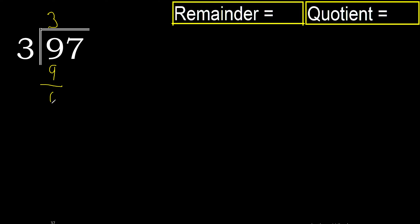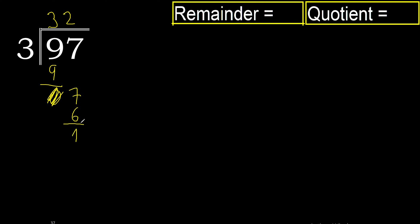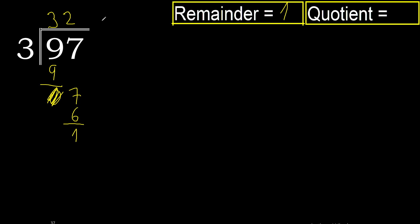9 minus 9 is 0, 7 brings down to 0, now with 7. 3 multiplied by 3 is 9, 9 is greater than 7, so not that. 3 multiplied by 2 is 6, 6 is the closest. 7 minus 6 is 1, there is no number that goes down, therefore finish. Therefore the remainder is 1, and the quotient is 32.